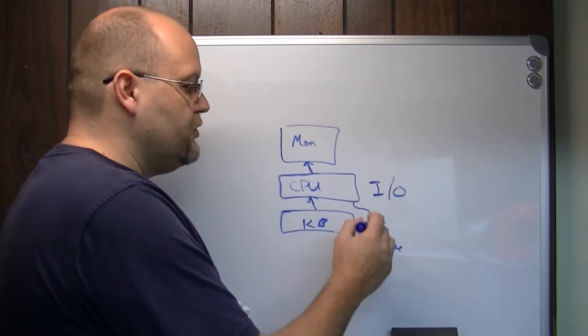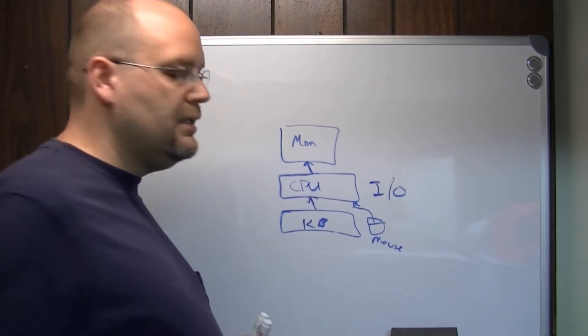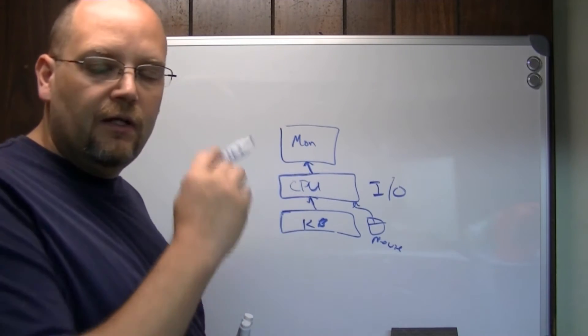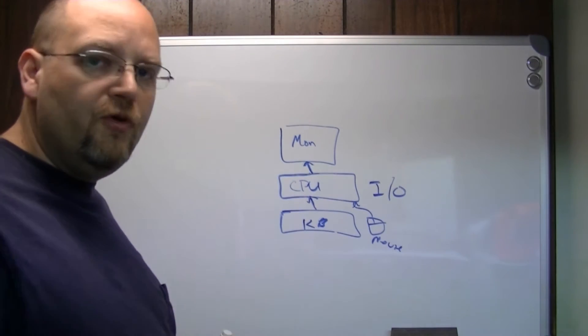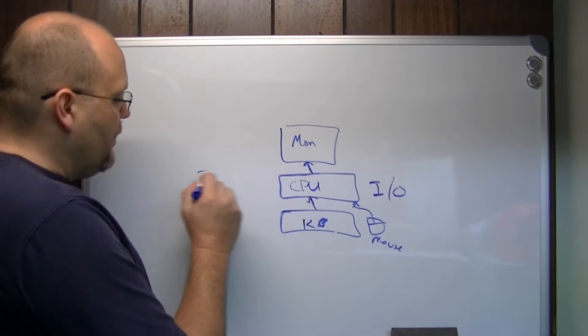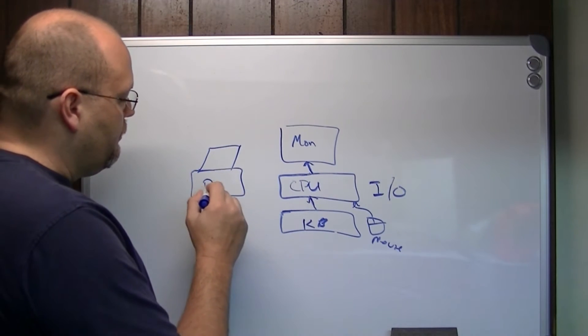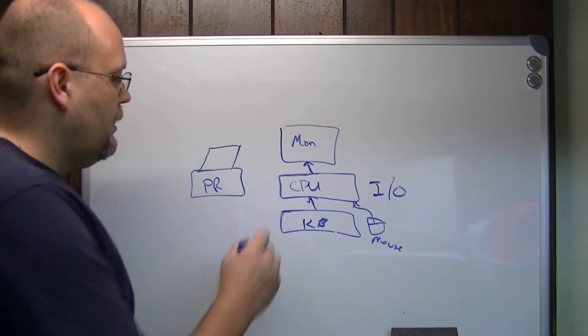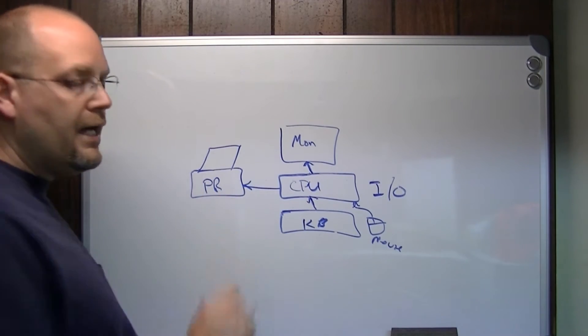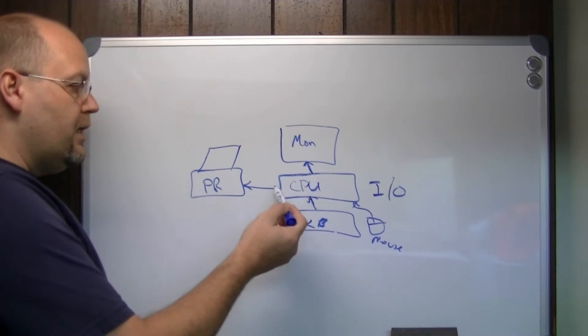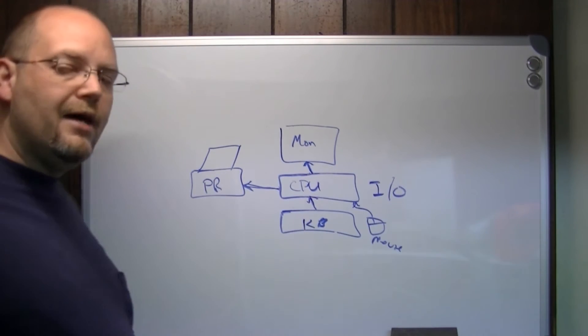The mouse is also generally an input device, it sends information into the computer, so that it knows the x, y coordinates of where to put the cursor on the screen as you move it around. Then we get into some of the other devices, such as a printer. The printer is generally an output device. You create information, you print it, and it sends the information out to the printer.